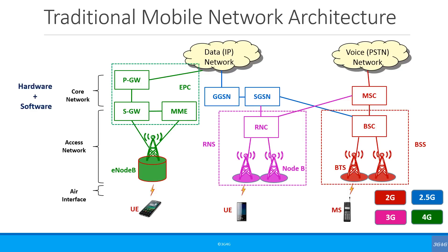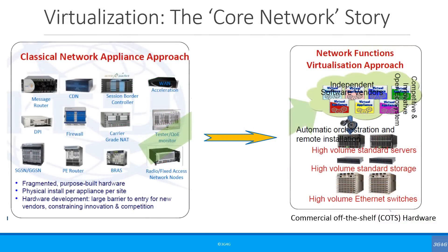The core network contains hardware and software, and the access network contains hardware and software as well. In the core network you may require different kinds of functionalities that include firewall, routers, gateways, etc.